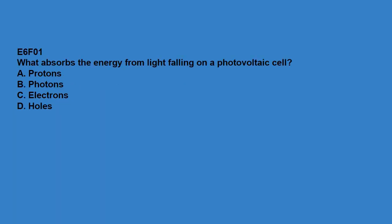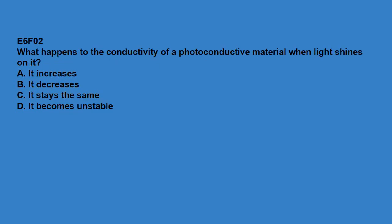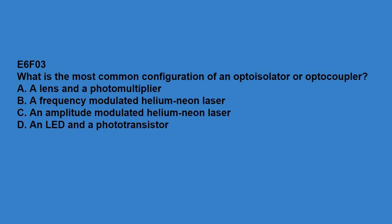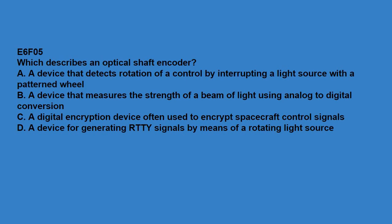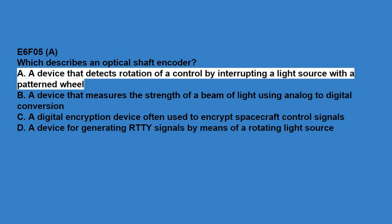E6F01: what absorbs the energy from light falling on a photovoltaic cell? Electrons. E6F02: what happens to the conductivity of a photoconductive material when light shines on it? It increases. E6F03: what is the most common configuration of an opto-isolator or opto-coupler? An LED and a phototransistor. E6F04: what is the photovoltaic effect? The conversion of light to electrical energy. E6F05: what describes an optical shaft encoder? A device that detects rotation of a control by interrupting a light source with a patterned wheel.